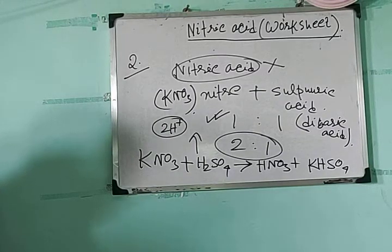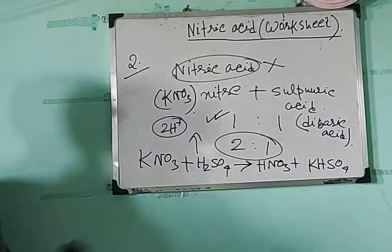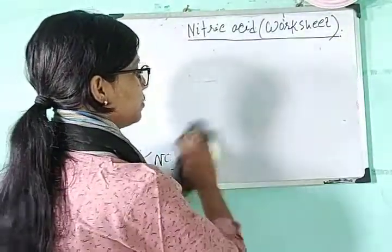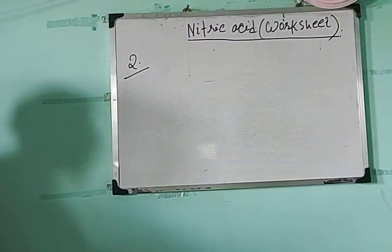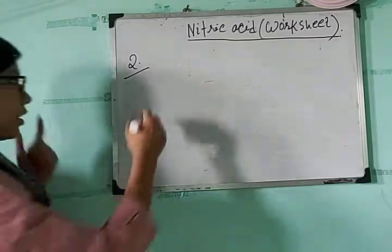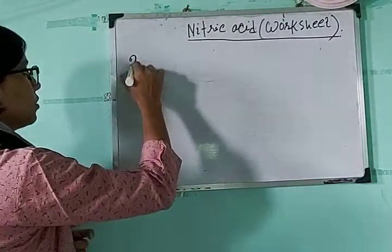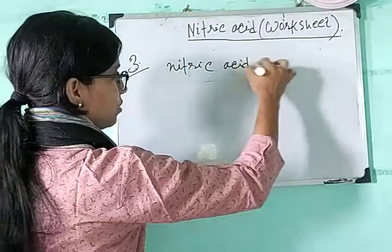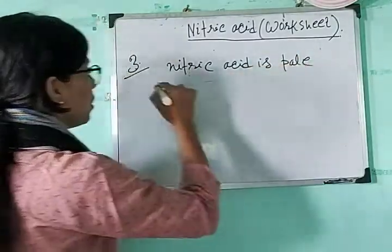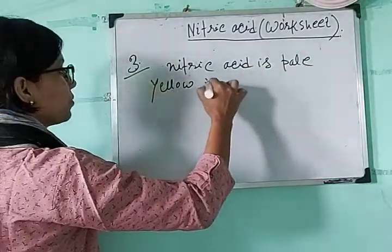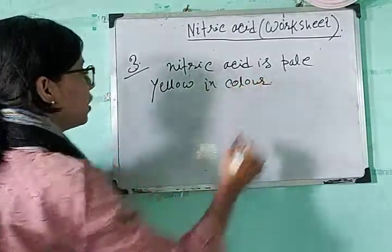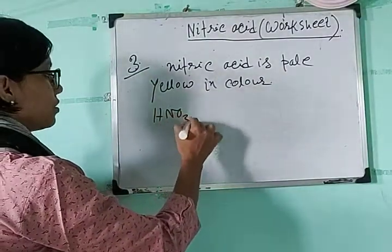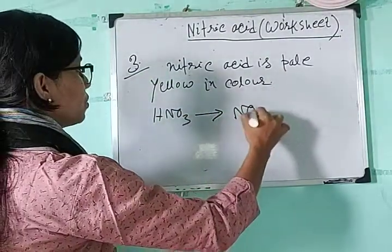Question number three: the nitric acid obtained in the laboratory is pale yellow in color. Explain. Nitric acid is pale yellow in color because nitric acid easily undergoes dissociation to produce nitrogen dioxide.